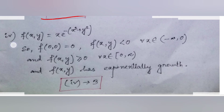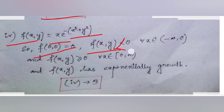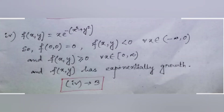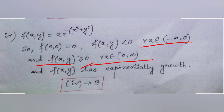For option four, f(x,y) = x·e^(−x²−y²). We have f(0,0) = 0; f(x,y) < 0 when x ∈ (−∞, 0); f(x,y) ≥ 0 when x ∈ [0, ∞); and f(x,y) has exponential growth behavior. So option number four belongs to graph three.